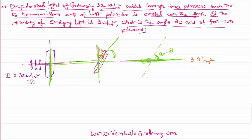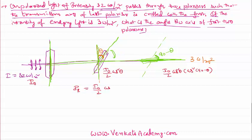If the initial intensity is I₀, after the first polarizer unpolarized light becomes I₀/2. After the second polarizer it becomes I₀/2 · cos²θ. After the third polarizer, cos²(90 − θ) of that is the component that comes out. So we can write the formula: I_resultant = (I₀/2) · cos²θ · cos²(90 − θ).